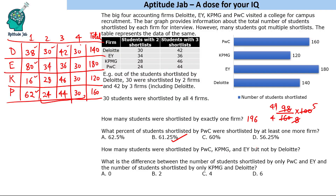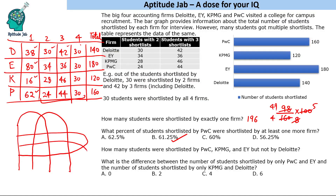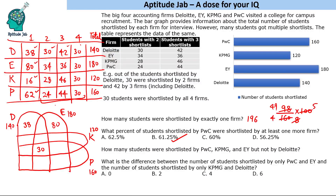The third question asks about students shortlisted by PWC, KPMG, and EY but not Deloitte. We'll now make a four-set Venn diagram to answer this. The four sets are Deloitte (140), EY (180), KPMG (120), and PWC (160). Since 30 people were shortlisted by all four companies, the central region — where all four overlap — is 30. The one-shortlist regions are: Deloitte only = 38, EY only = 80, KPMG only = 16, PWC only = 62.